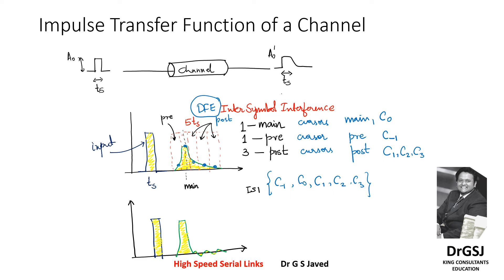Equalization will happen in two places. On the Rx side, you will have the DFE. On the pre side, it will be on the Tx where we will do pre-equalization. We will try to push the energy bins back into the center, consolidating the energy of each bit, so that the maximum energy is re-concentrated at the output after the equalization stages. We may not get 100% energy back but will try to get at least 80 to 90% such that decision-making happens correctly.